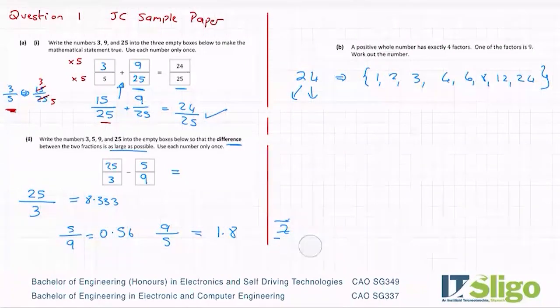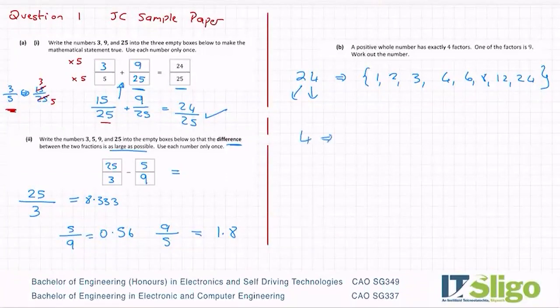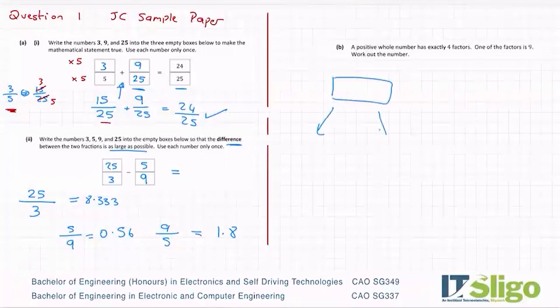If you have a number such as four. So if I was to work out the factors of four, I would say that's four by one and two by two. So you'd write the factors as one comma two comma four. So they are the factors of four. And you can see I don't repeat the two. The two just goes in once. So when it says it has four factors, it has four numbers just like that. So a positive whole number has exactly four factors. So I don't know what the number is, but I do know that if I call the number X, for example, it has a pair of factors called X by one. And it has another set of factors over here. Nine multiplied by something else.